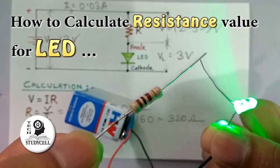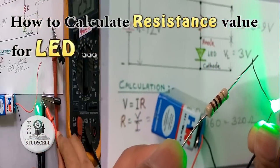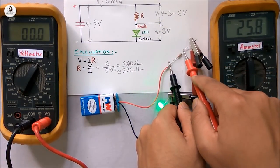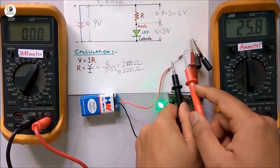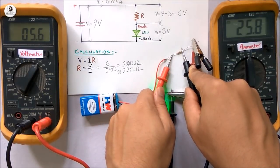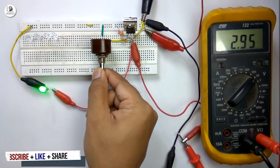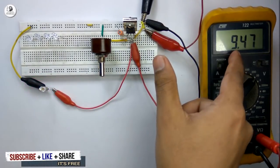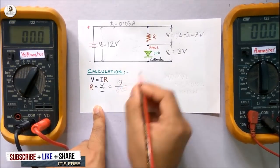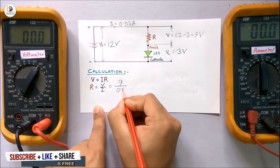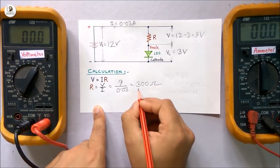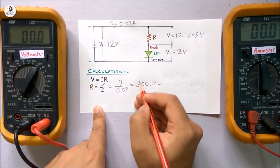Hello viewers, welcome to Texture Diesel. In this video, we will see how to calculate the resistance value while connecting an LED in the circuit. It is very important to connect a resistance in series with the LED if the forward voltage of the LED is less than the input voltage of the circuit. Otherwise, the LED may burn out. In this video, we will discuss the calculation of the resistance value for different input voltages with some practical experiments.